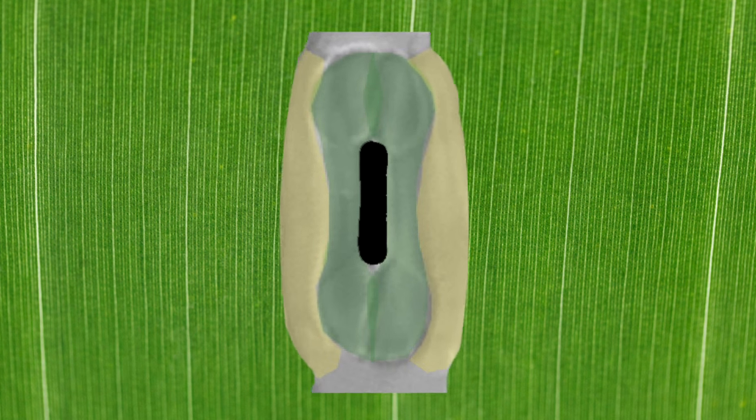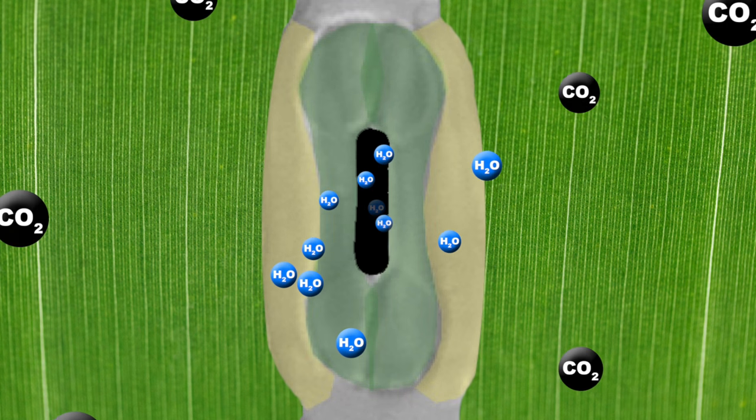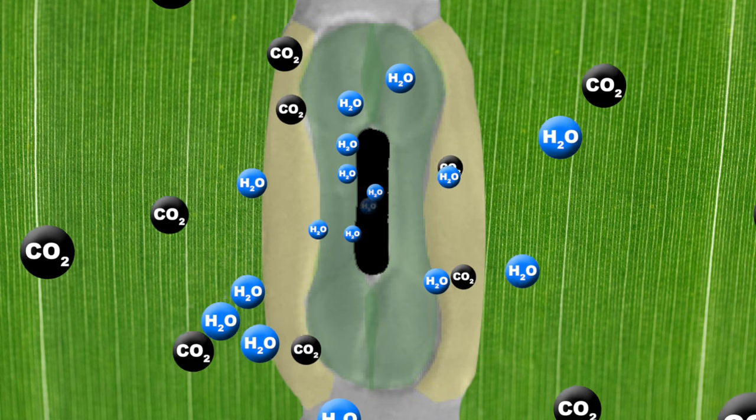Plants have tiny pores on their leaves called stomata, Greek for mouse, through which they take in carbon dioxide from the air and from which water evaporates.